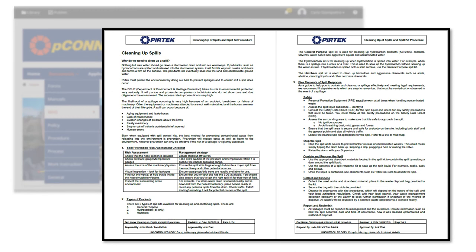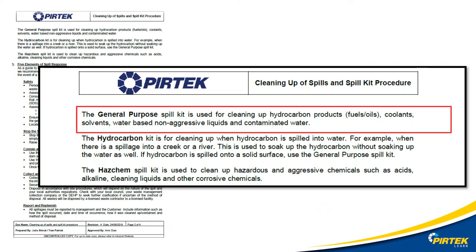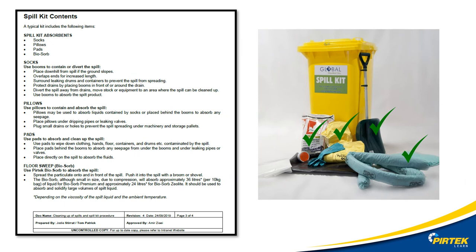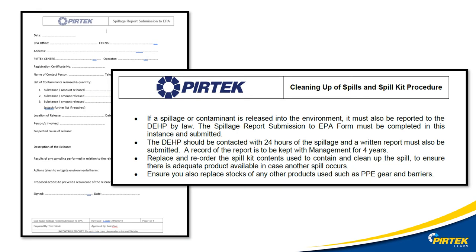Pertech has a Clean Up Spills Work Instruction — a series of instructions to deal with spills, available from PConnect and PMoodle. The work instruction specifies that a general-purpose spill kit must be on hand, containing socks, pillows, pads, and a floor sweeper. If a spill is not contained and contaminates the environment or a waterway, you are legally required to report the incident to the EPA — as also specified in the Pertech Spill Work Instruction.